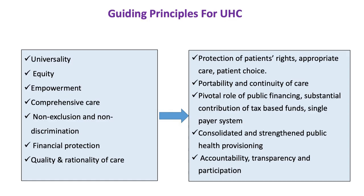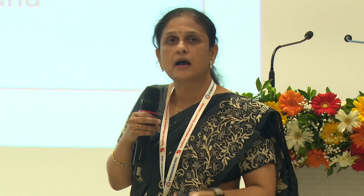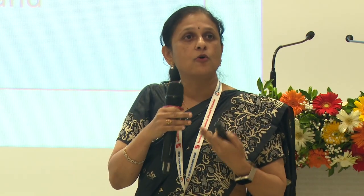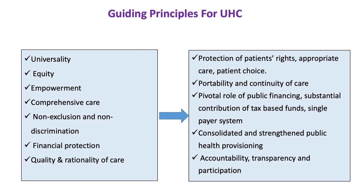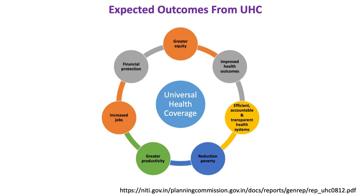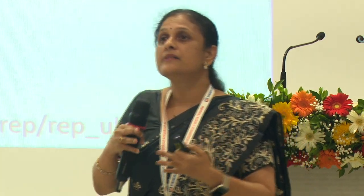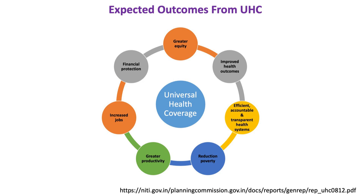WHO has enlisted guiding principles: equality irrespective of gender, class, geographical areas, or socioeconomic status; comprehensive care delivered as near to the people as possible; non-exclusion and no discrimination; financial protection along with quality. The expected outcomes are that universal health coverage will ensure good health of the individual, families, and societies, improving their productivity to themselves, their families, and the nation as a whole, with accountable and transparent health systems and reduced disease burden.